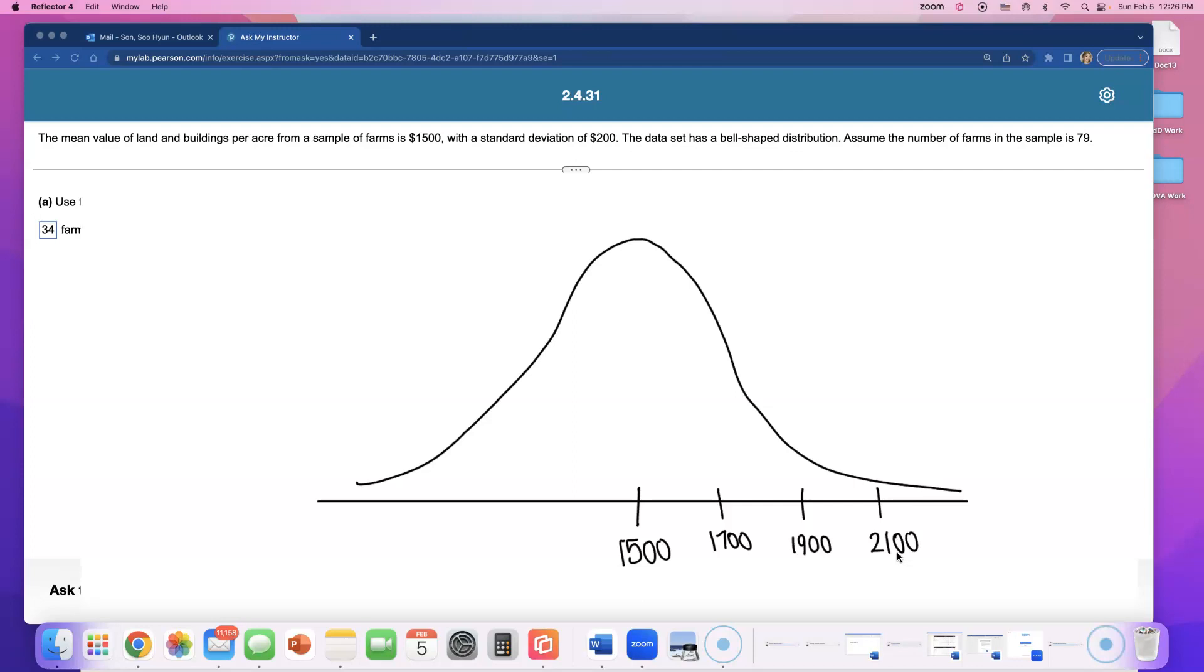Now go to the left by subtracting 200, going three to the left. Subtract 200, you get 1300, then 1100, and down to 900. You do three to the right and three to the left.